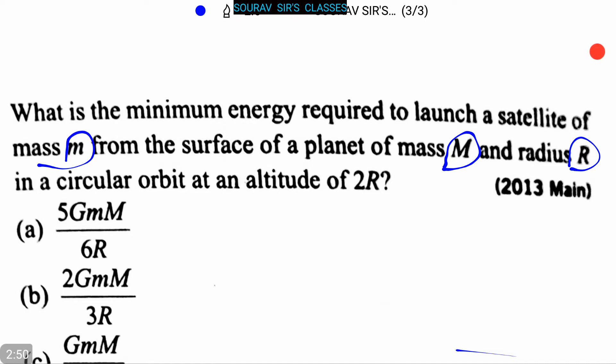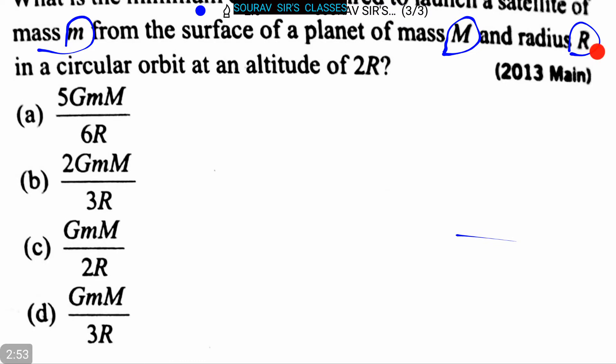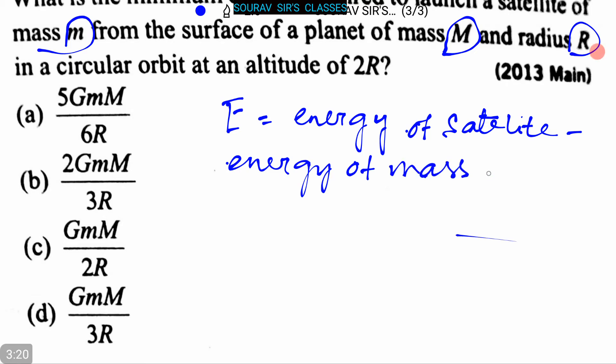So now let's proceed to the answer. Four options are also given. Let us assume that E equals the energy of the satellite, the energy of mass on the surface of planet.